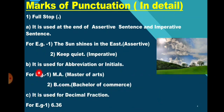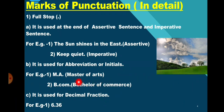The full stop is also used for abbreviations or initials. For example, M.A. is an abbreviation — the full form is Master of Arts. B.Com is also an abbreviation — the full form is Bachelor of Commerce. So for abbreviations we use a full stop. The full stop is also used for decimal fractions, for example, 6.36.